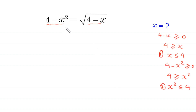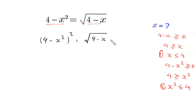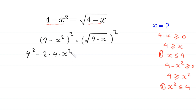Now let us continue by squaring both sides. We have the equation 4 minus x squared. We take the square on the left hand side, equal to square root of 4 minus x, and we take the square on the right hand side. This gives us 4 minus x squared whole squared on the left, equal to 4 minus x on the right.